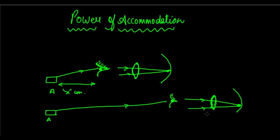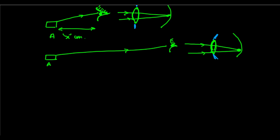The eye lens can change its focal length with the help of the ciliary muscles. This ability to change its focal length in order to focus on nearby and far-off objects is called the power of accommodation of the eye.